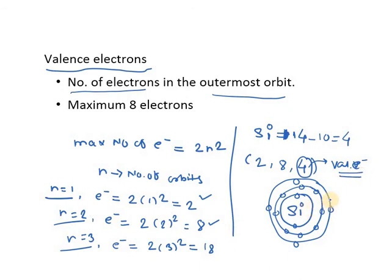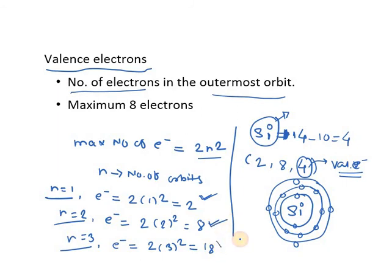The outermost orbit contains 4 electrons, and these 4 electrons are called valence electrons. As far as electronics is concerned, the entire concept revolves around silicon. Silicon has 4 valence electrons, and they are the major players in the electronics industry. They always try to reach a stable configuration by accepting or losing electrons. The maximum number of electrons in any orbit is given by 2n² — first orbit: 2, second: 8, third: 18.